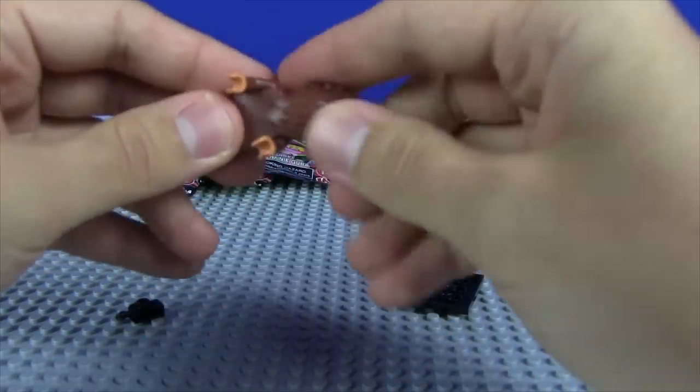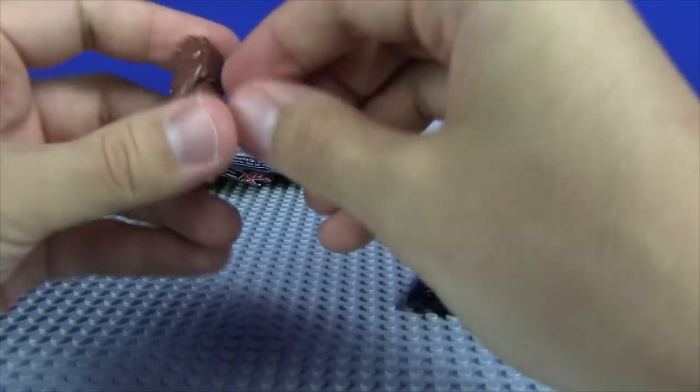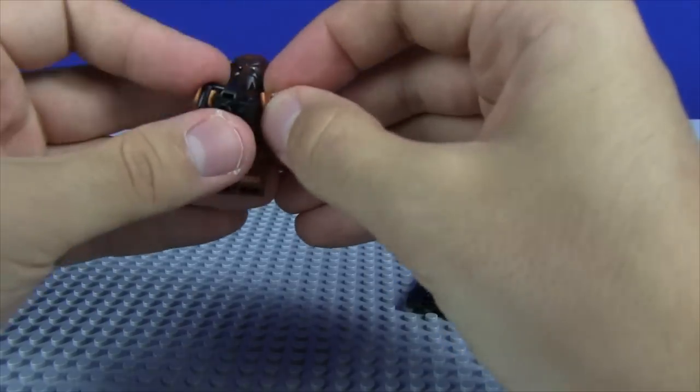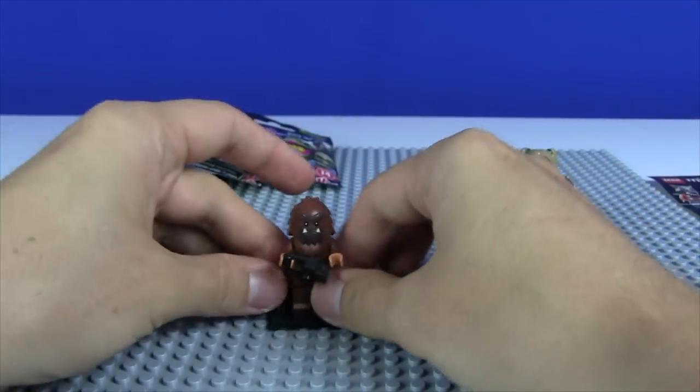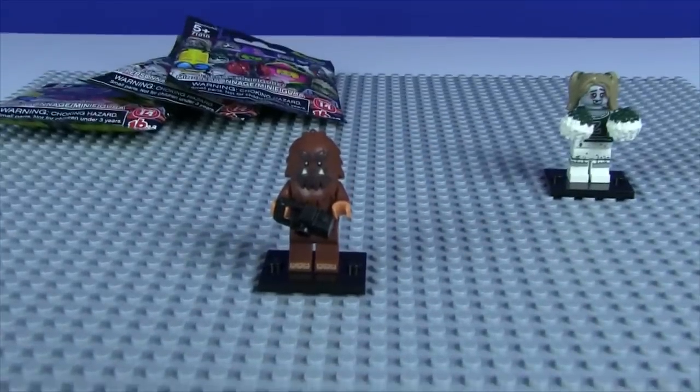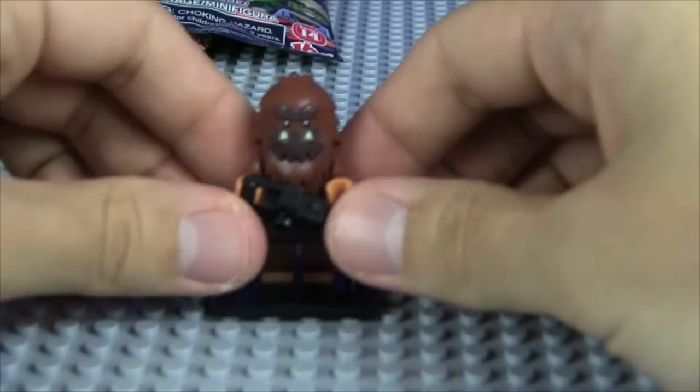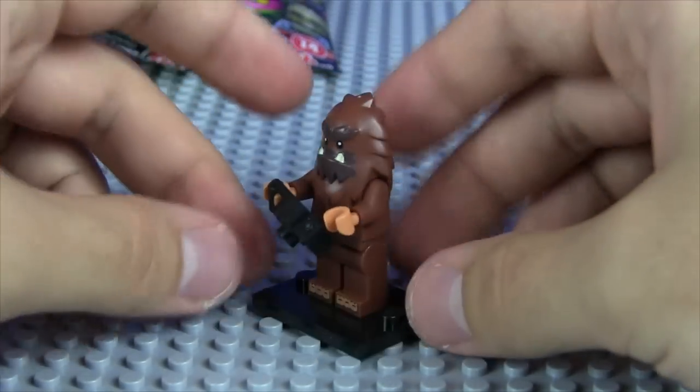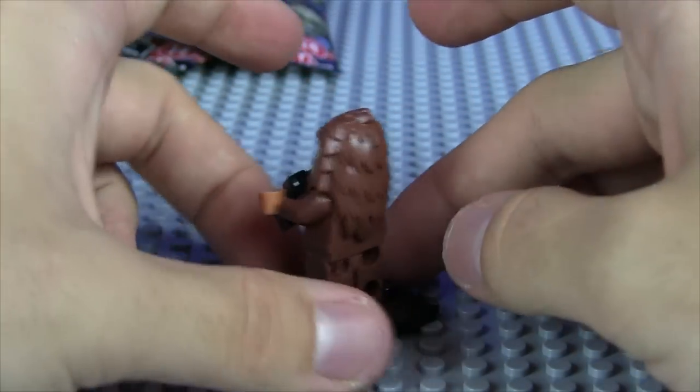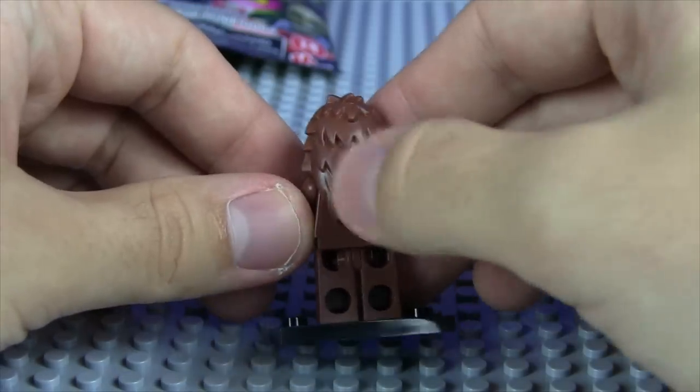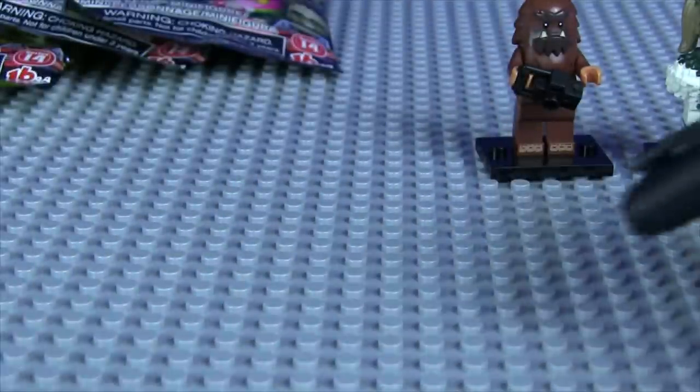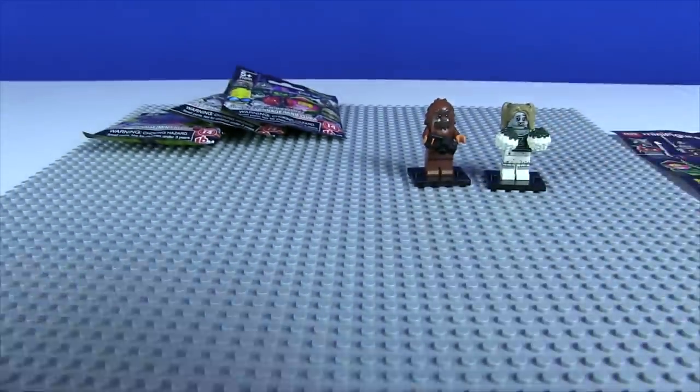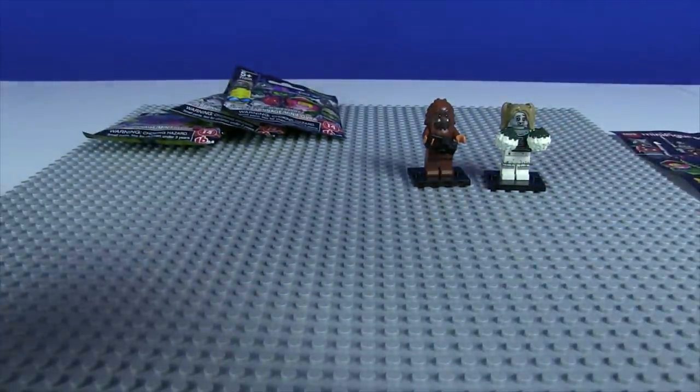All right, two for two in guesses, and two for two in not getting any duplicates. That's pretty awesome. Good start, let's keep it up. Now of course, I've said that before, and usually when I say that, then I end up getting some duplicates. So hopefully I didn't just jinx us. But this is an awesome figure, and I actually have the other Yeti that they released. The white and blue one from Series 11. That one was really cool as well. So this is another lovely figure for sure. Look at that. I love that sculpt right there on the rigid area. That's really neat. And once again, grabbing the marker to mark down figure number 15.